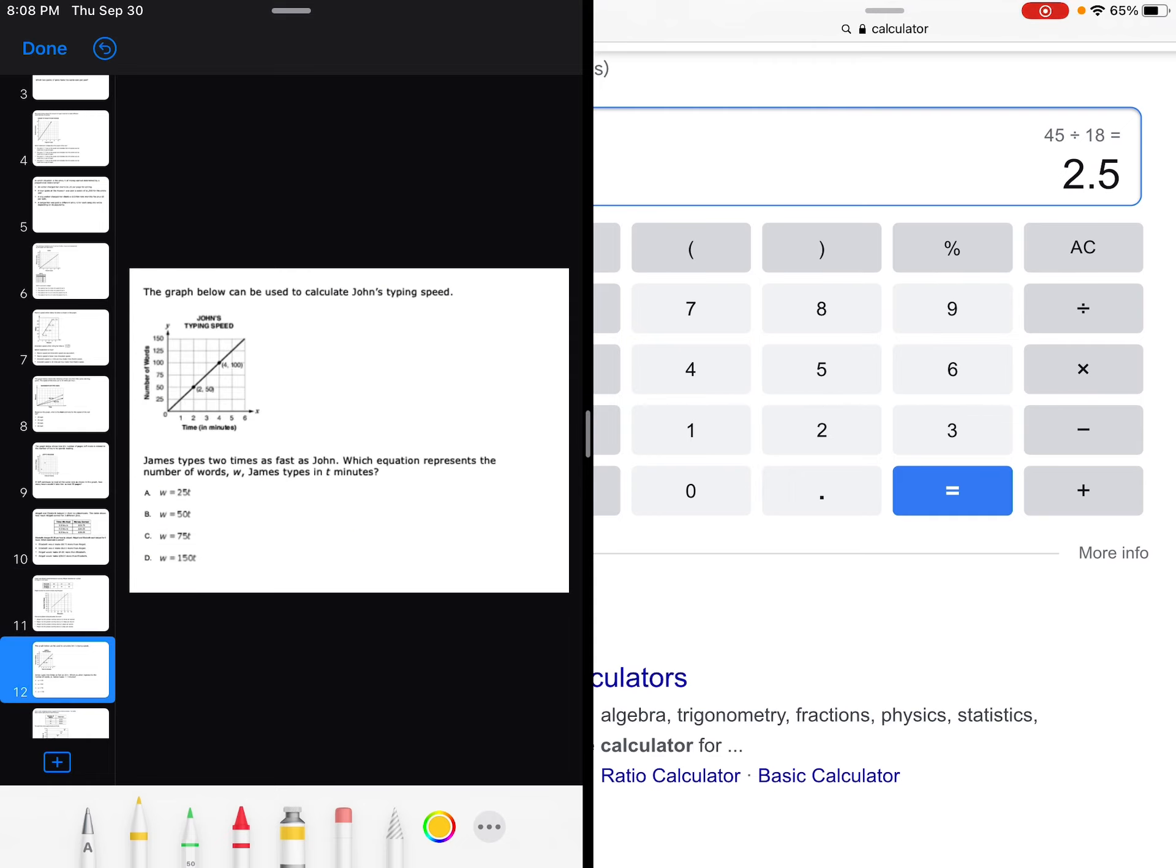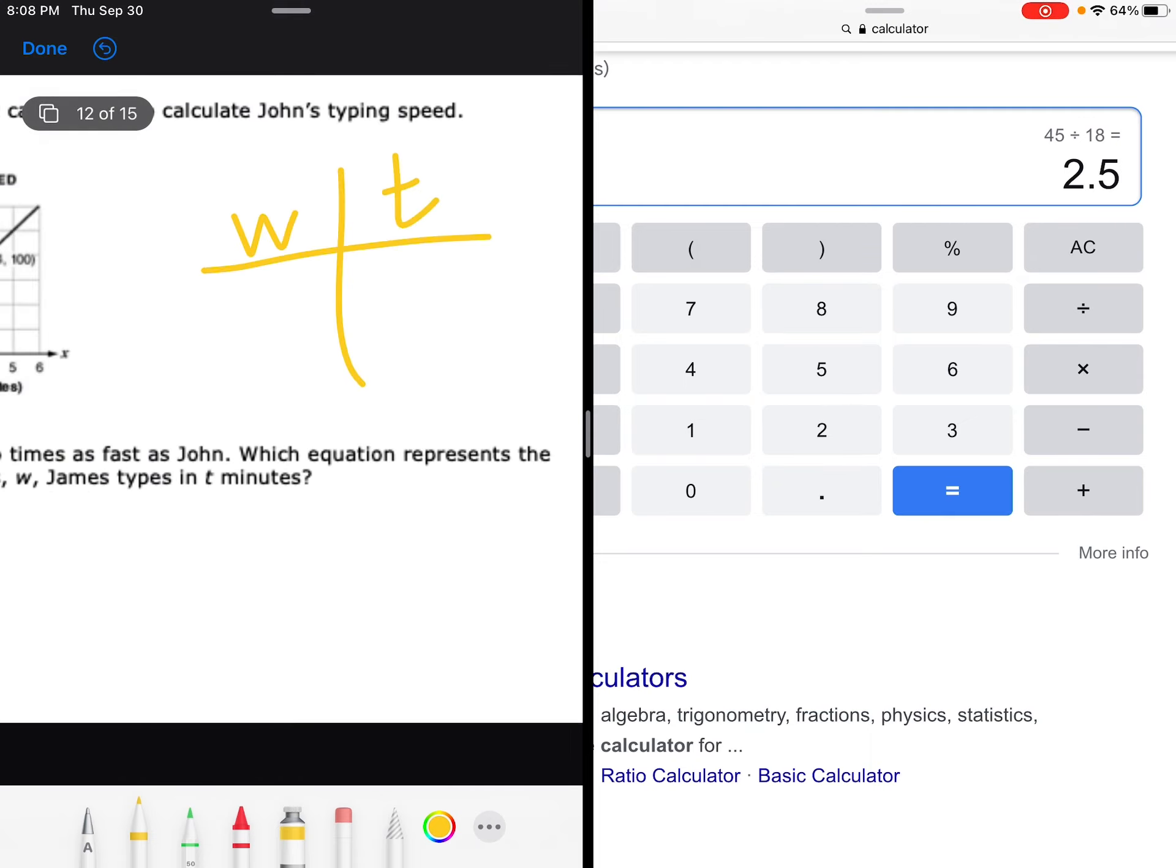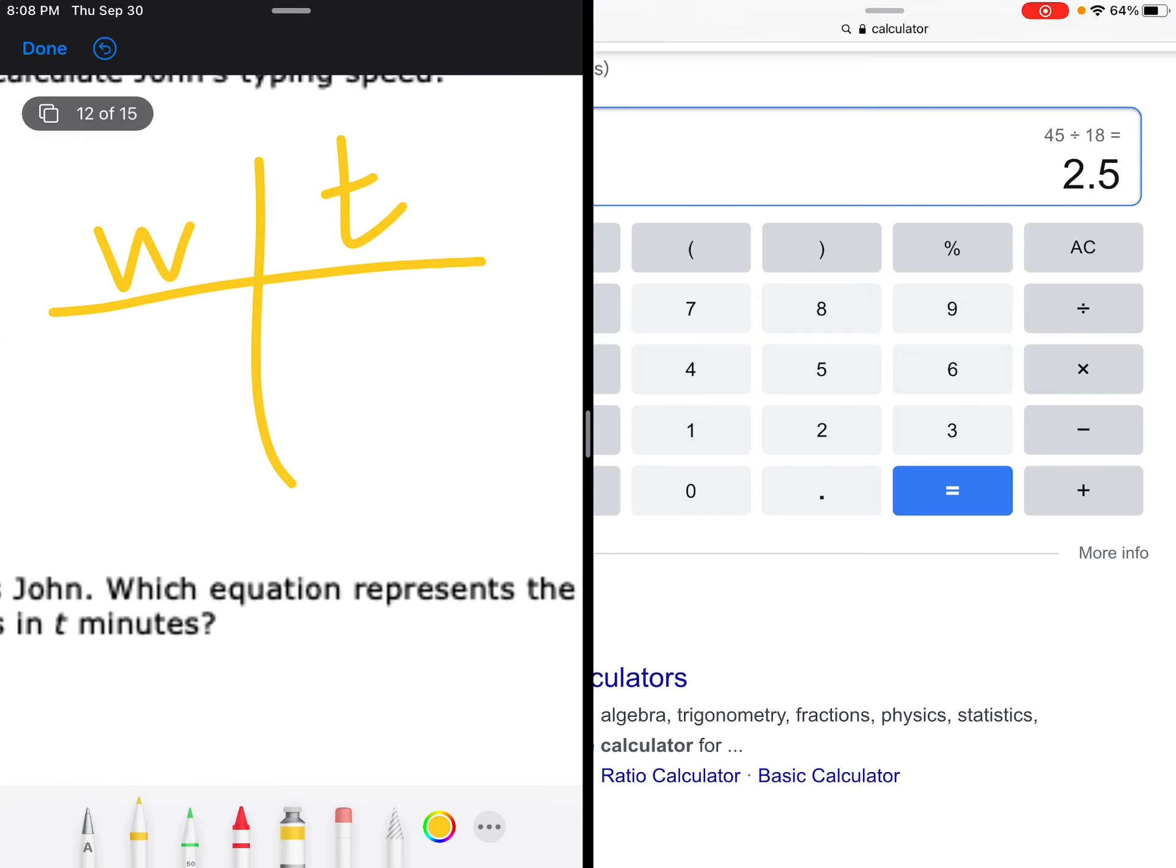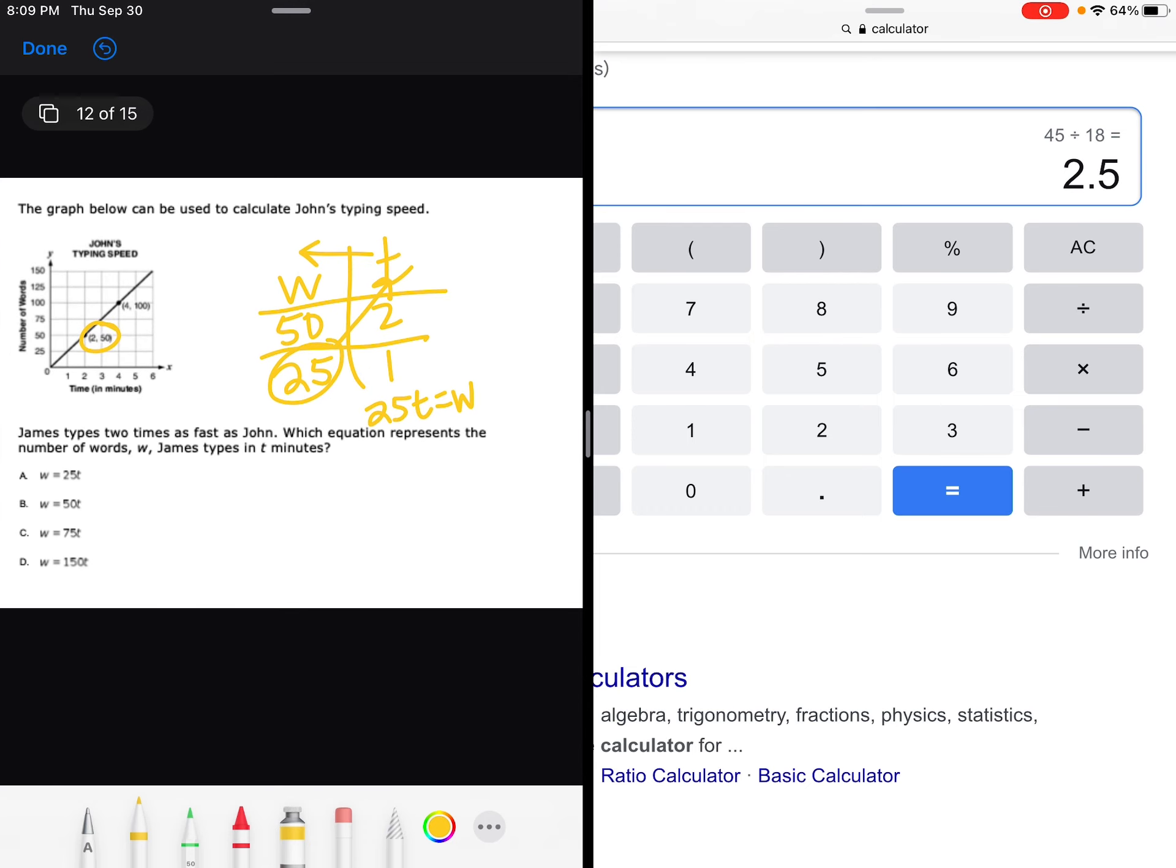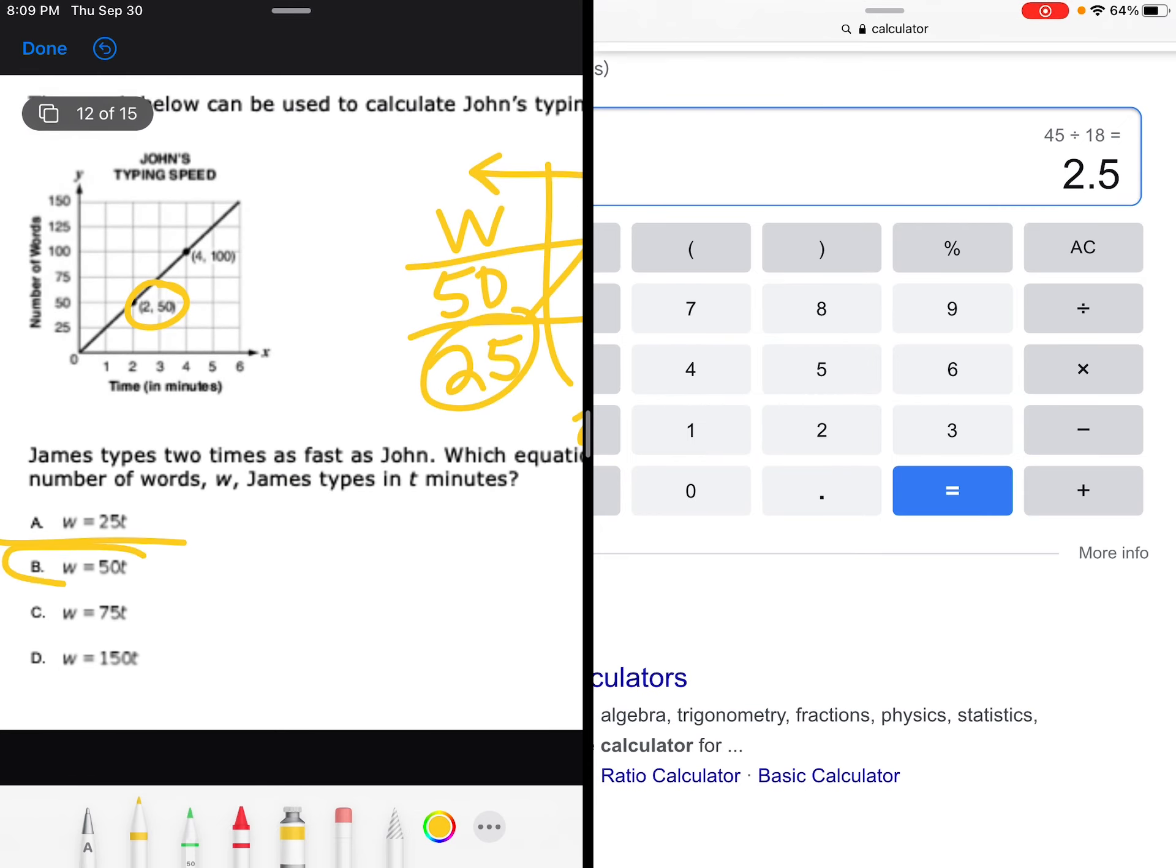The graph below was used to calculate John's typing speed. James types two times as fast as John. Which equation represents the number of words James types in T minutes? So words and time. So in two minutes, he types 50 words. So that means in one minute, he types 25 words. So I know that 25 times T is going to give me W. And that's John's speed, but I want to find James' speed, who's twice as fast. So if he's twice as fast, he can type 50 words in a minute. So it's B.